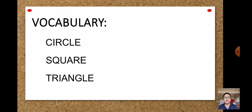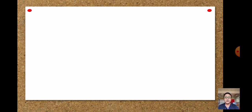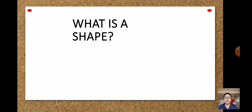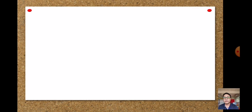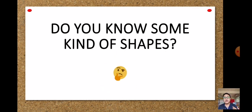This is the question: what is a shape? What do you mean by a shape? A shape can be defined as the form of an object or its outline. So that is the shape — it's the form of an object or its outline. Now I will discuss the different kinds of shapes.